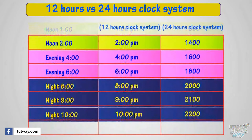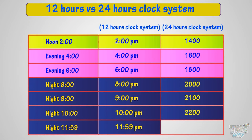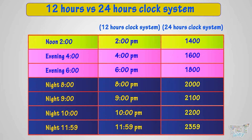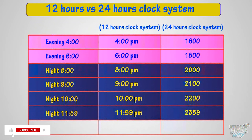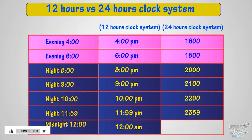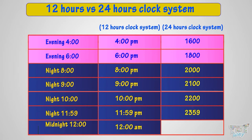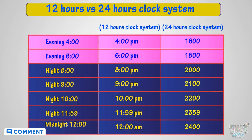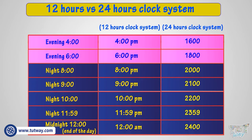11:59 at night is called 11:59 p.m. in the 12-hour clock, and 2359 hours in the 24-hour clock system. 12 midnight at the end of the 24-hour day is called 12 a.m. in the 12-hour clock system, and 2400 — that is 2400 hours — in the 24-hour clock system.